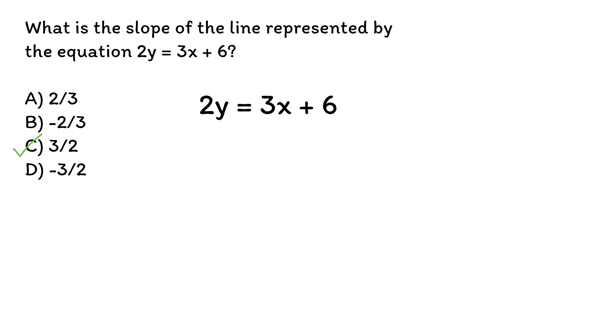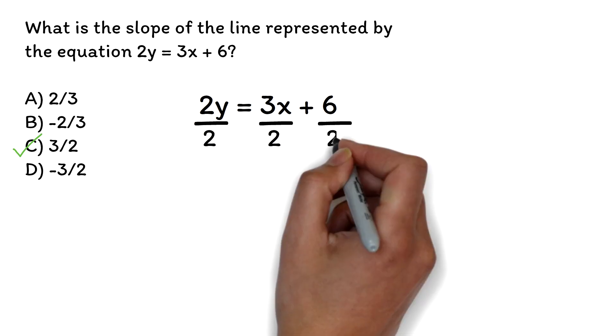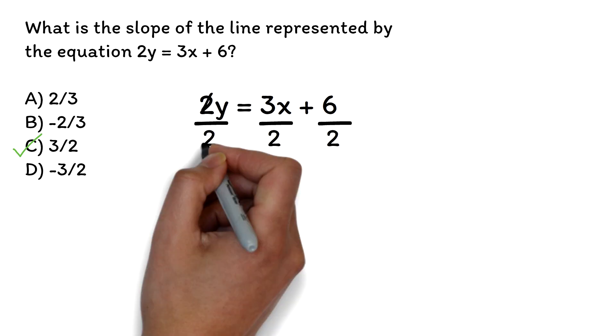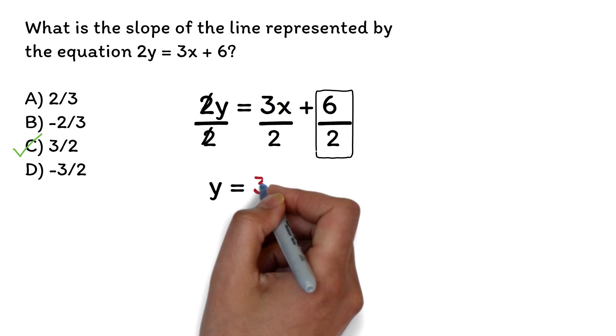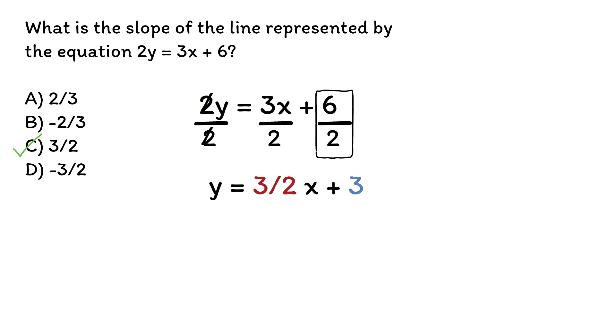This equation is not in the slope-intercept form. For it to be in the slope-intercept form, we want the y to be by itself. We can achieve that by dividing through by 2. The 2 will cancel out. 6 over 2 is 3. So we have y equals 3 over 2x plus 3. Now, this is in the slope-intercept form of the equation of a line, y equals mx plus b. We said in this form, the number with the x is our slope. So our slope is 3 over 2.